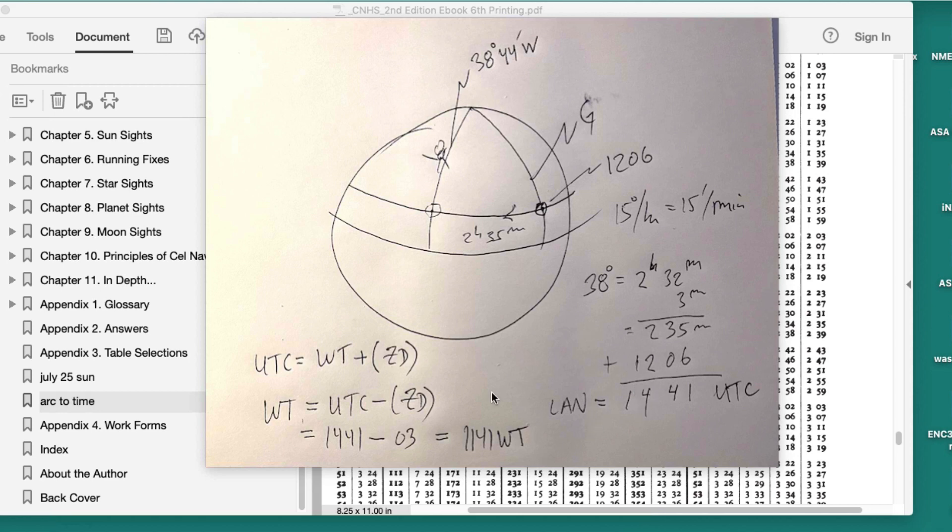So we have 38 degrees equals 2 hours 32 minutes, and 44 minutes equals 3 minutes. So I sum those up and I get 2 hours and 35 minutes. That's how long it takes the sun to go from here to here. It started here at 12:06, so 12:06 plus 2 hours 35 minutes is 14:41 UTC. So that's the answer for the Greenwich Mean Time or the UTC, they're the same thing.